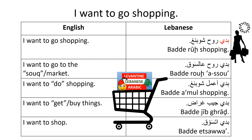So 'baddi' plus the verb 'rooh' — 'rooh' means to go. So 'baddi rooh,' 'baddi rooh shopping.' You can also say 'baddi rooh as-suq' — to the market. 'Suq' is market. 'Baddi rooh as-suq.'